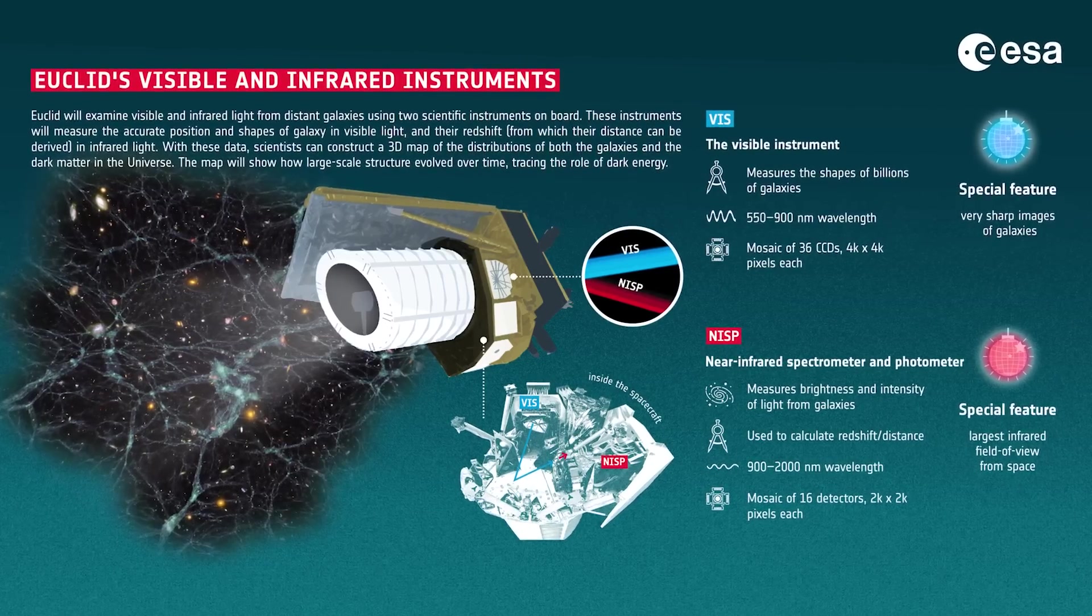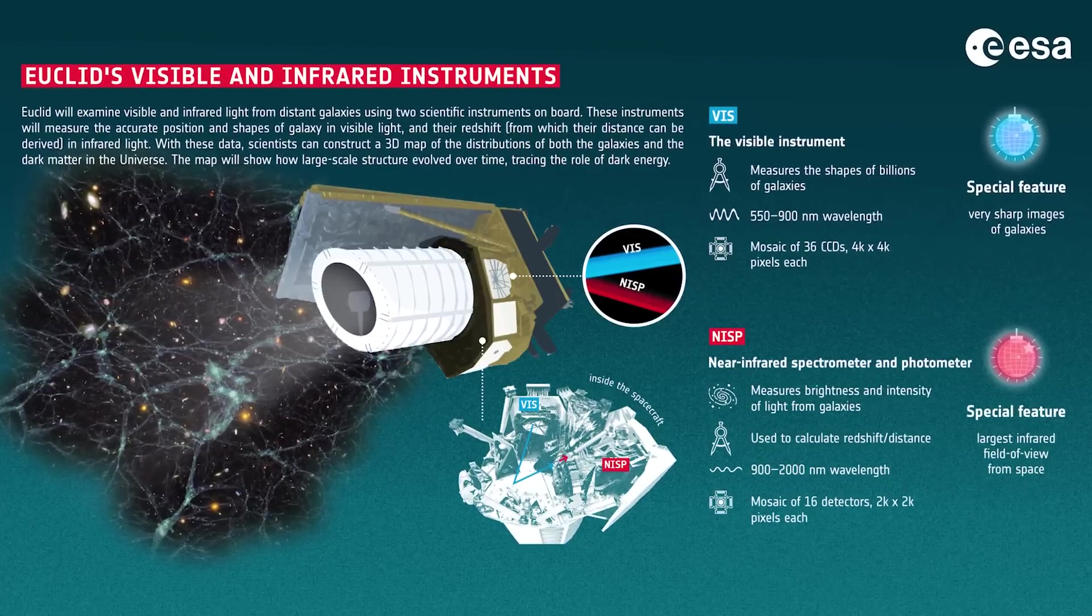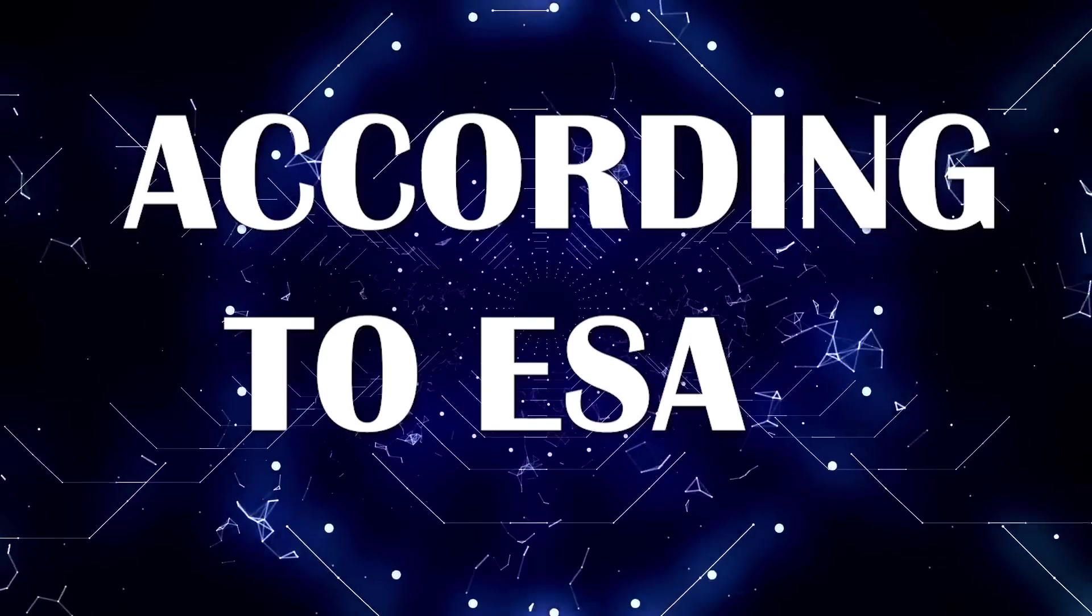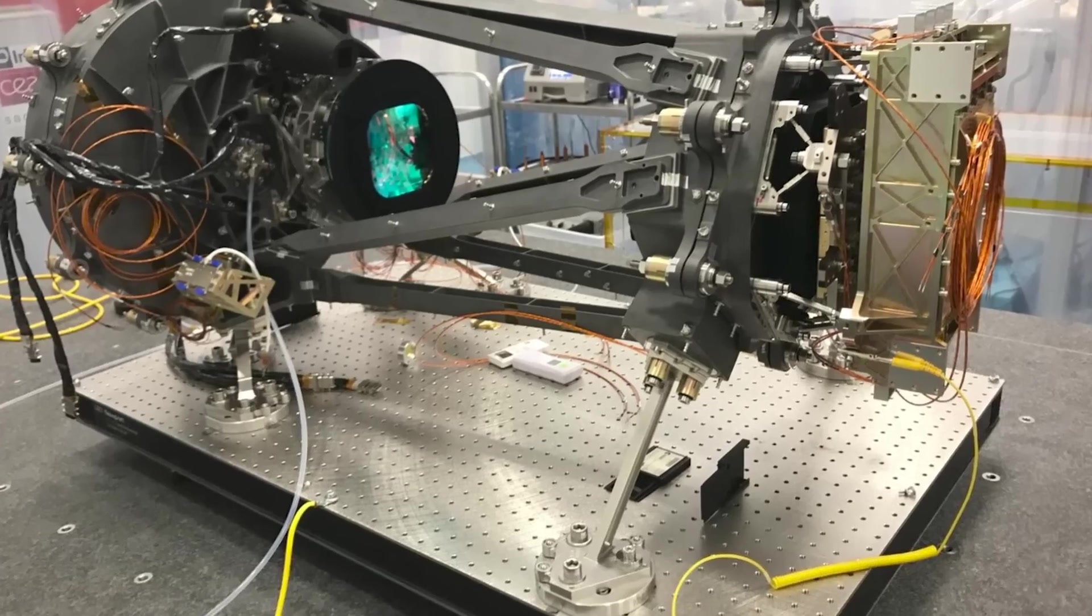Now, let's delve into the topic of NISP, an acronym for Euclid's Near-Infrared Spectrometer and Photometer. According to ESA, NISP has a dual purpose.